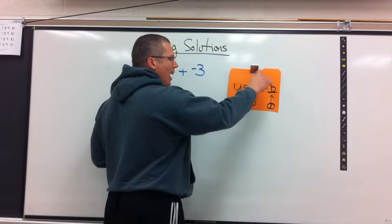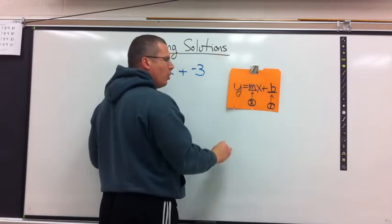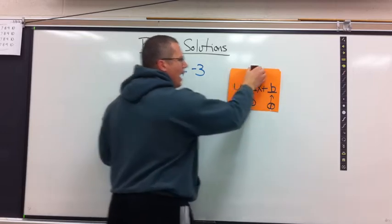Slope is my tilt, how many up, how many over. Y-intercept is my starting point on the y-axis. Where does the line intersect the y-axis?